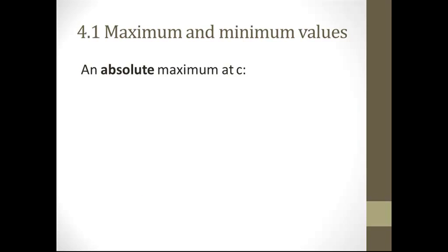What is an absolute maximum value? The absolute maximum of an equation is that point, say c, where x equals c, where the value — the y value, f(c) — is going to end up being greater than or equal to all the other f(x)'s that you could plug in. So this is the highest y value that you would get for any x. The place x equals c on that graph where you get the highest value, greater than or equal to all other points on that equation.